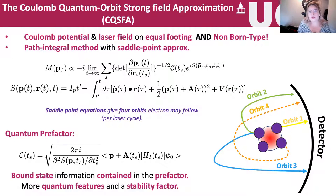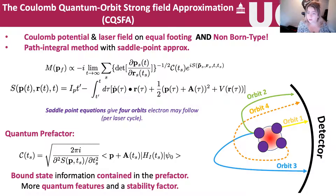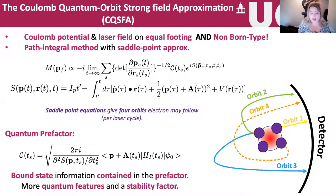Now let's look at our model — the Coulomb Quantum Orbit Strong-Field Approximation, the CQSFA. We include the Coulomb potential and the laser field on equal footing; it is non-Born-type, which allows us to redefine what is direct and rescattered. We use a path integral method with saddle point approximation, which gives four orbits the electron may follow. Orbits one and two correspond to what the SFA calls direct scattering; orbit three is neither direct nor rescattered but somewhere in between; orbit four is the traditional rescattered orbit. We also include a quantum pre-factor, which allows quantum interference patterns; binding information and stability factors are contained in this factor.